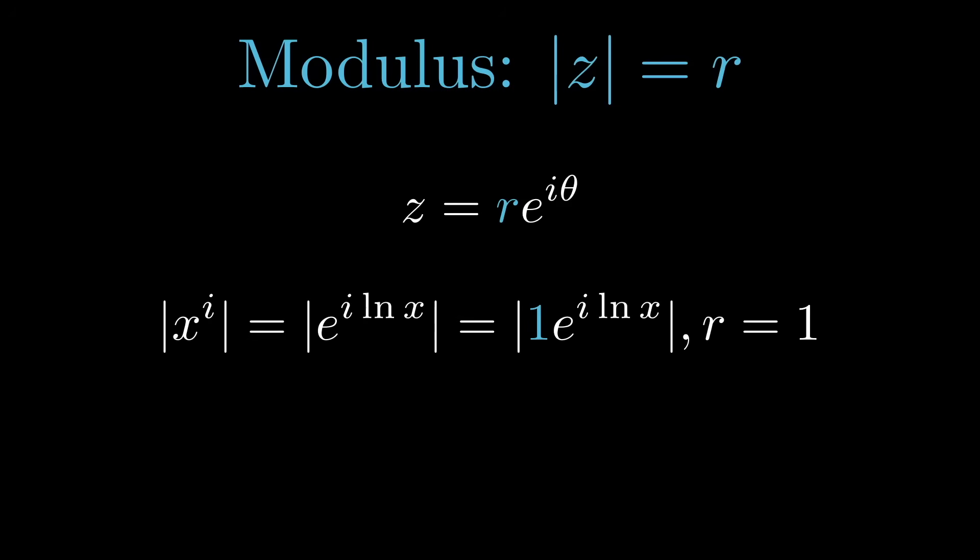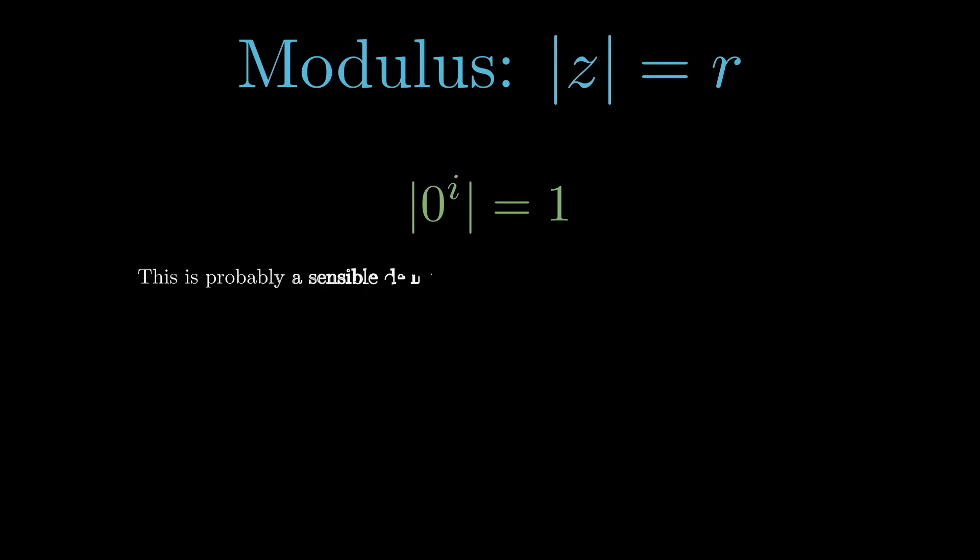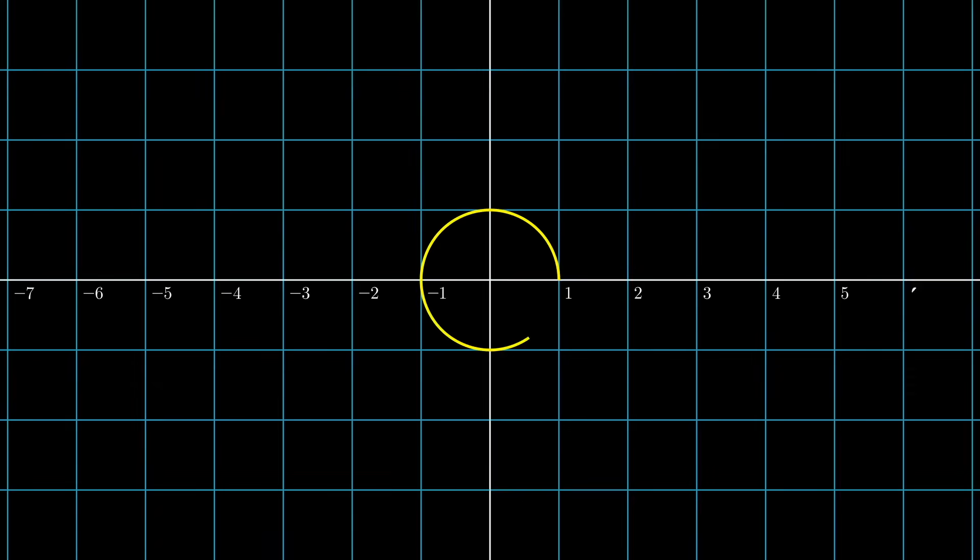Again, we do have some uniqueness concerns when looking at the complex logarithm. And I'm not entirely sure it makes sense to define a modulus for numbers that don't even exist. But I do think that this is a sensible definition for the modulus of 0^i. It's almost like 0^i lives one unit from the origin, and it can't decide where it wants to make its permanent residence. There's just not a phase that makes sense.